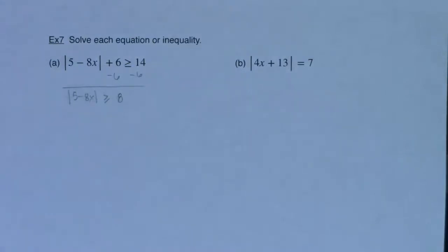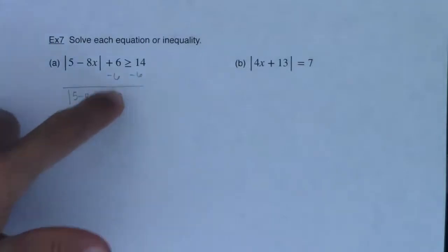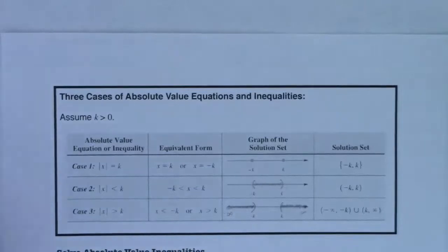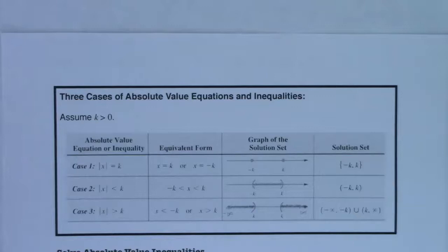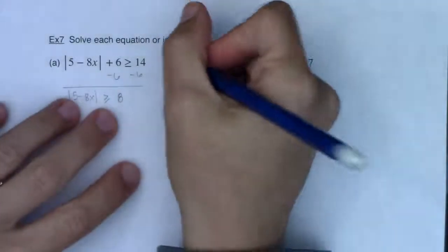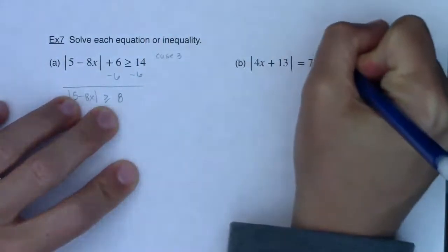Looking at these, I see the greater than or equal to symbol on example 7a and the equal to symbol on example 7b. So example 7a is going to be a Case 3 and example 7b is going to be a Case 1. Let me write those down — this is Case 3 and this is Case 1.